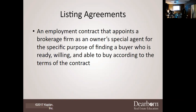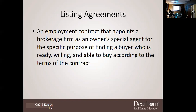On the forms we'll talk about, there's a spot that says real estate associate or broker's associate — that is the real estate agent. The part that says broker is where the broker signs. As it says, the listing agreement is an employment contract that employs or appoints a brokerage firm as the owner's special agent for the specific purpose of finding a buyer who is — write this down — ready, willing, and able to buy according to the terms of the contract. Ready, willing, and able.